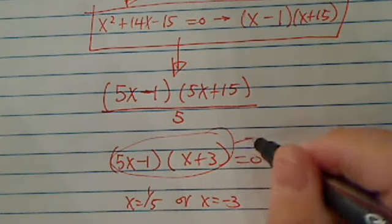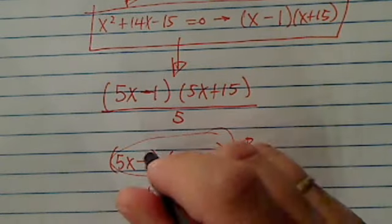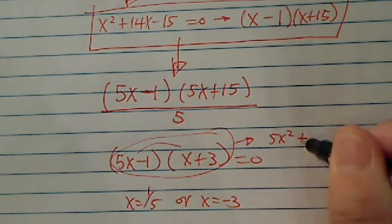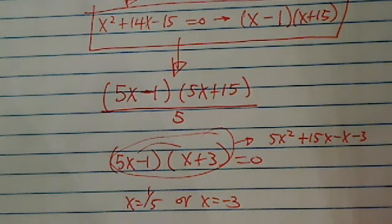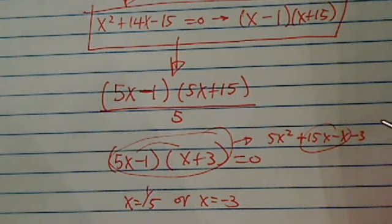Now let's just double check and make sure we got what we need to do. Let's FOIL it, so we have 5x squared plus 15x minus x, and I have minus 3. That's exactly what I needed, which is plus 14x.